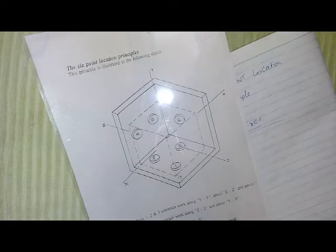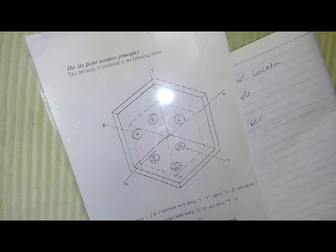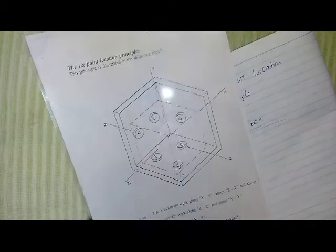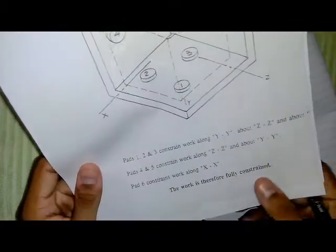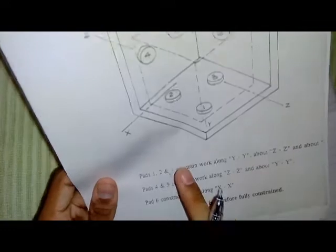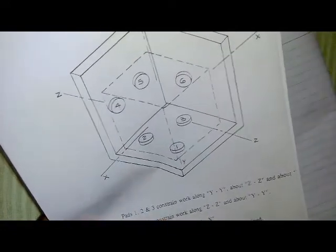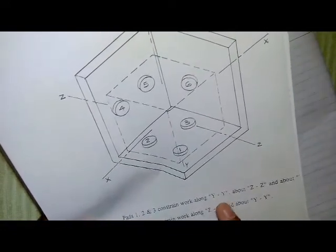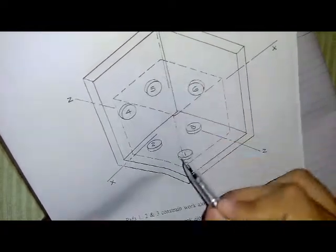For example, in fixtures. The six-point locating principle is very easy. In this, the work is fully constrained. For example, as shown in the figure, points one, two, and three constrain the work along one axis.